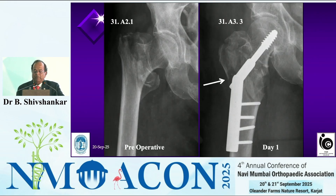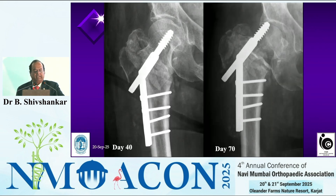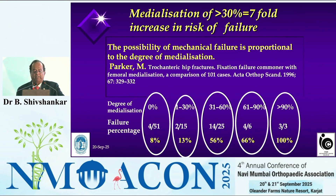Coming to some plating techniques — we all know that in a precarious lateral wall, if the lateral wall breaks, there is uncontrolled medialization leading to seven times more failure. If you are doing a sliding hip screw with a broken lateral wall, it was said that less than 20.5 mm lateral wall thickness — you should not do DHS because the chances of breaking the lateral wall are very high.